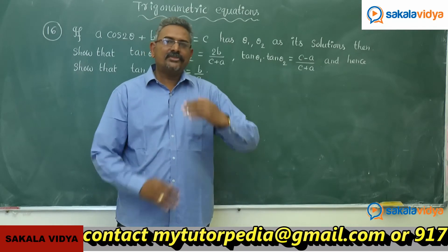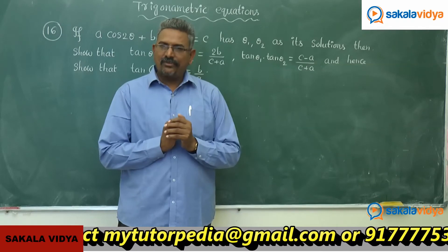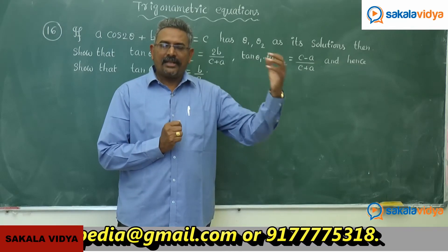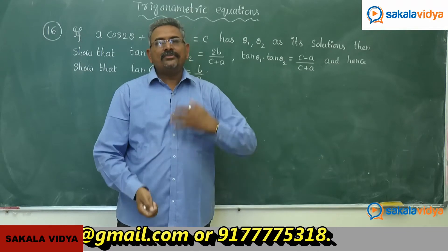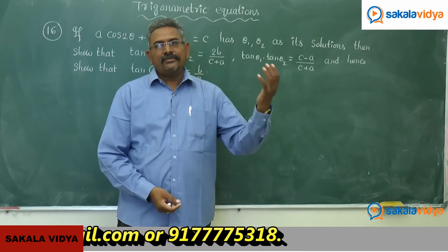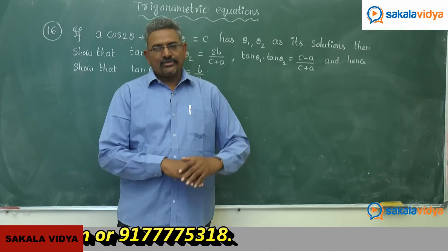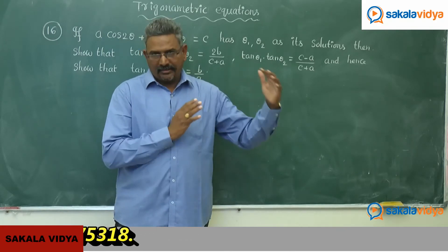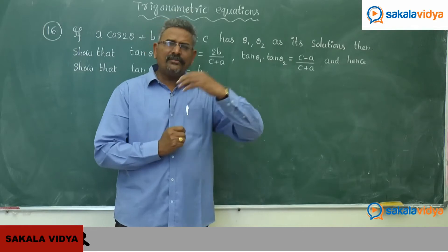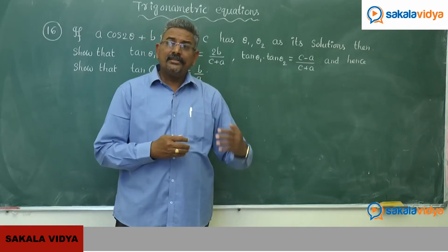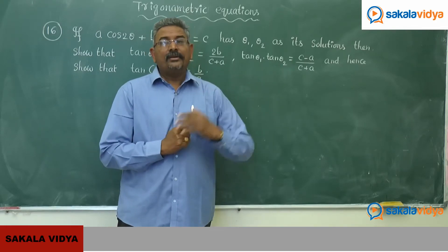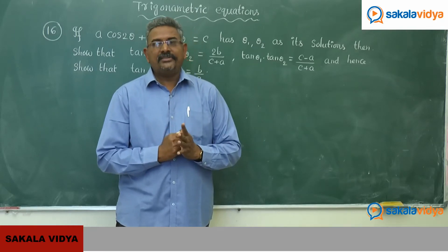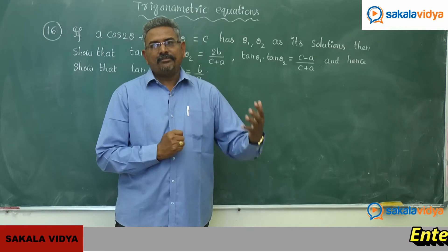This kind of strategy has to be followed to solve this problem. The first step is to convert cos2θ in terms of tan θ and sin2θ in terms of tan θ. Then we get a quadratic equation in tan θ. After that, find the sum of the roots, then the product of the roots, and after that evaluate tan(θ₁+θ₂).